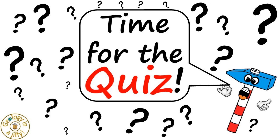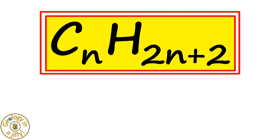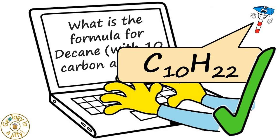Time for the quiz! What is the formula for decane with 10 carbon atoms? Using the formula, the formula for decane is C10H22. Well done!